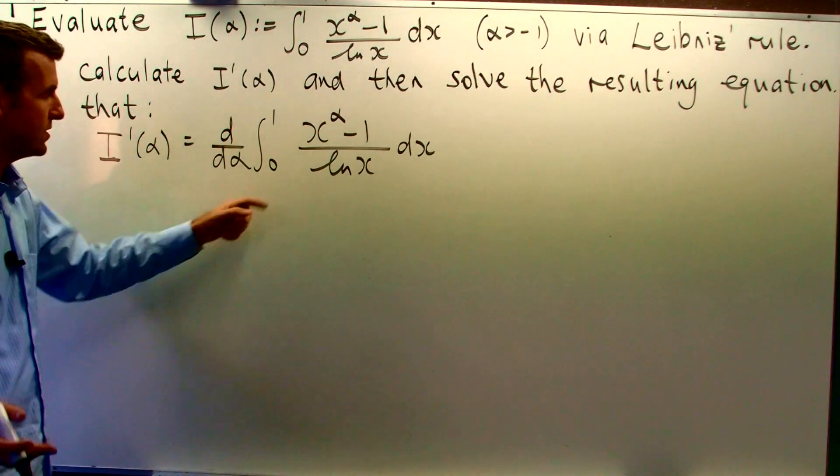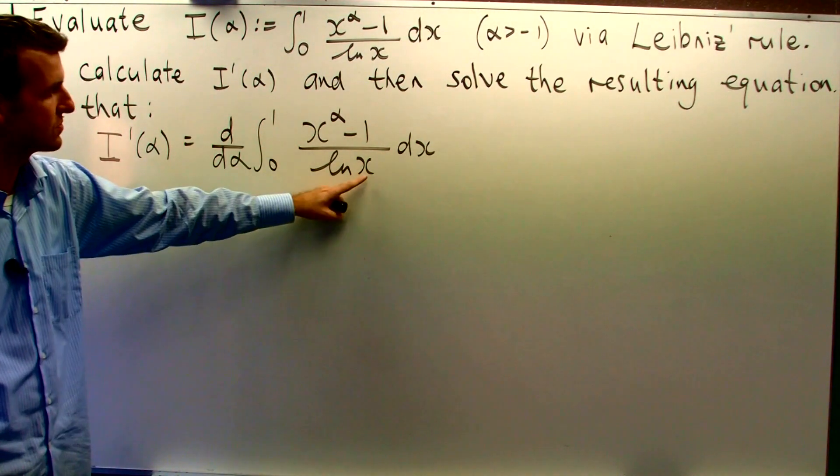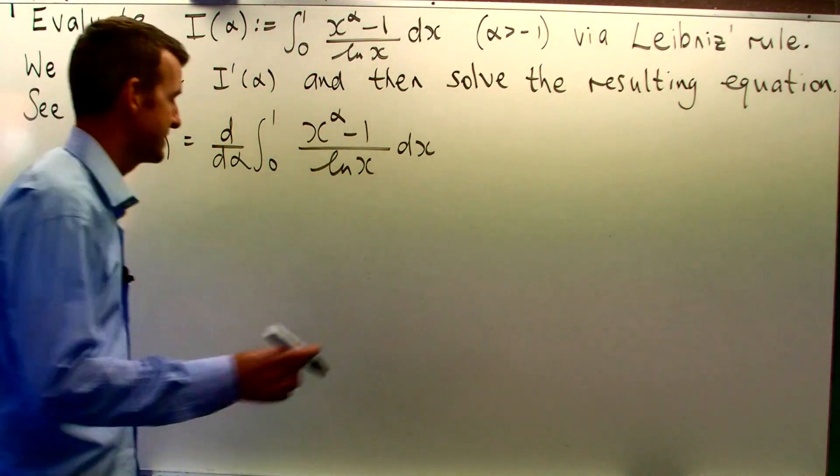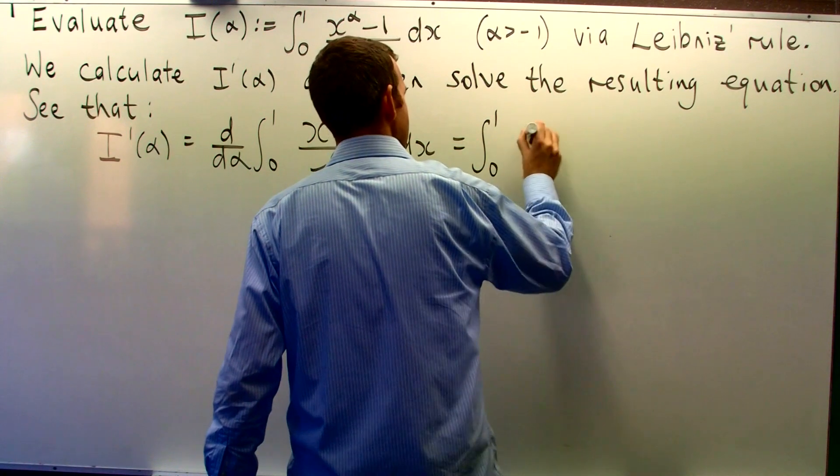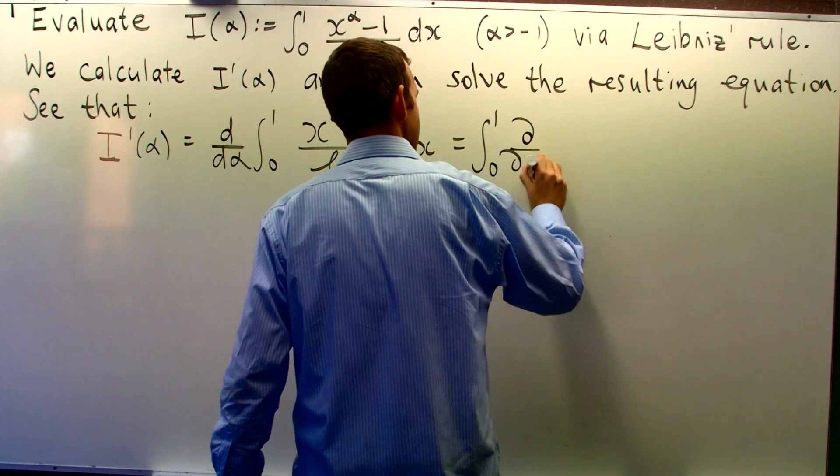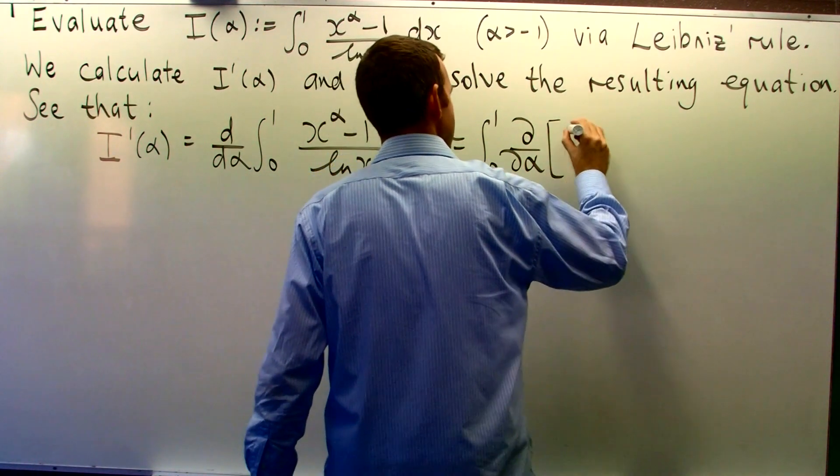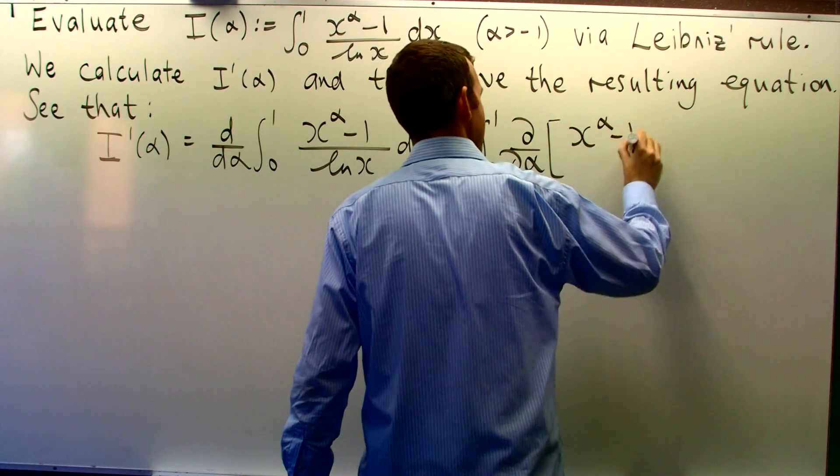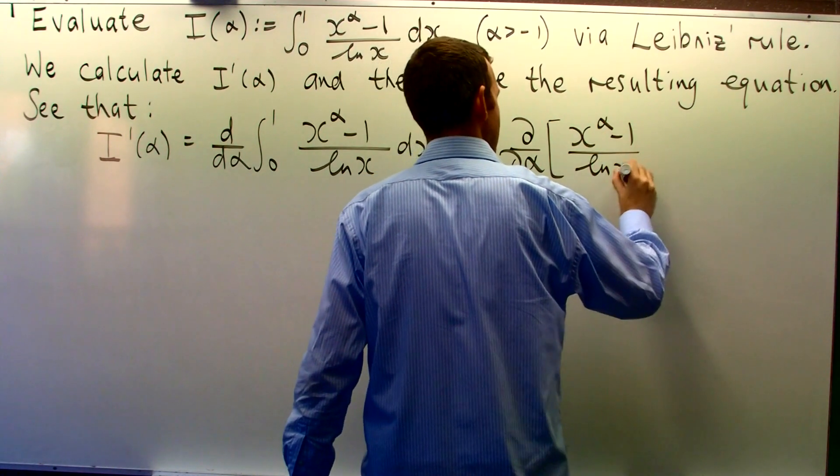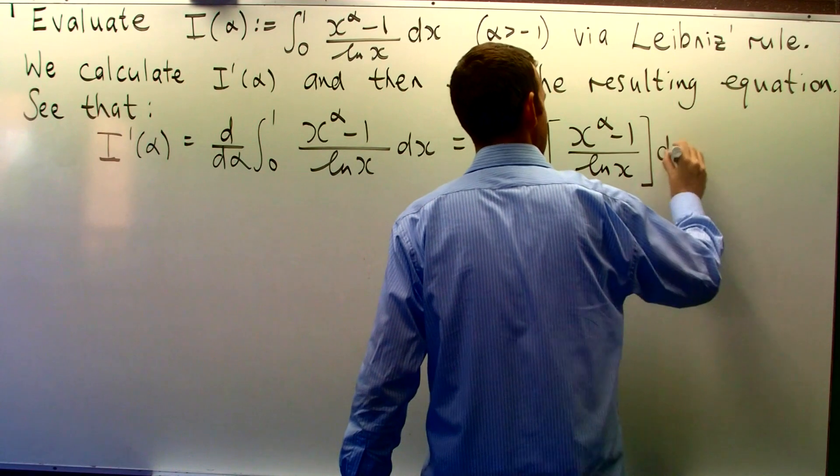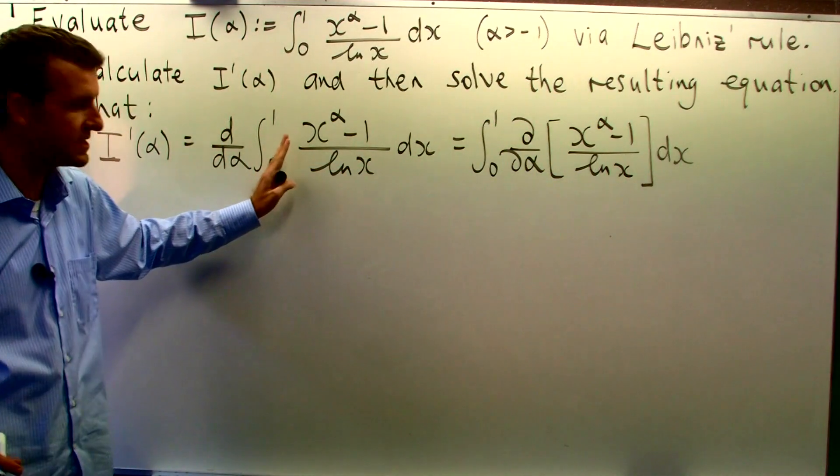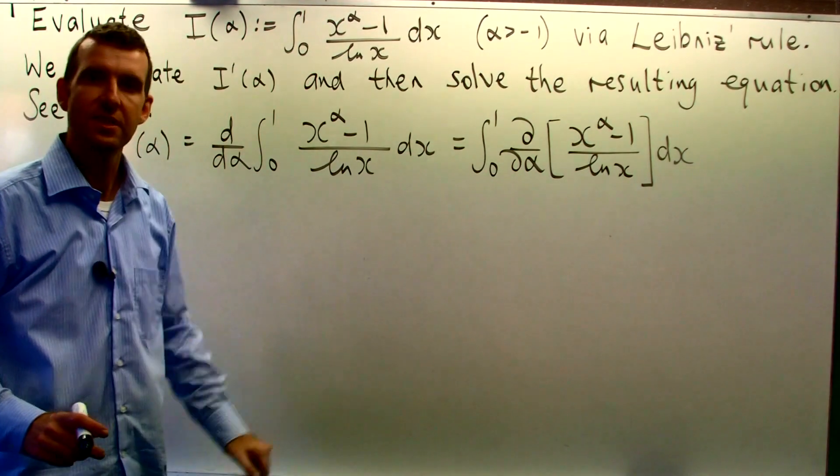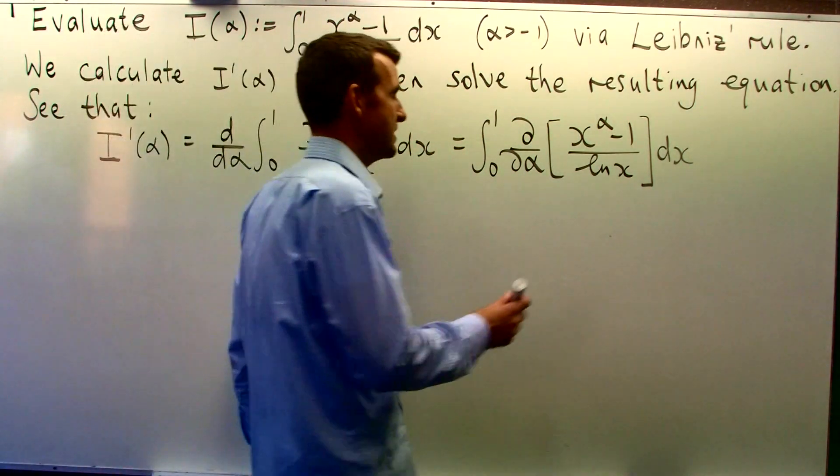Why do we do that? Well, this is a function of two variables, x and alpha. So from here to here, we've pushed in the d/dα and changed the straight d's to curly d's.